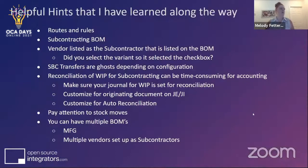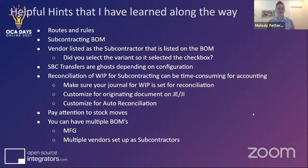Some helpful hints from being new to Odoo but understanding client needs from my manufacturing background: routes and rules are extremely important and must be set up correctly. The subcontracting bill of materials must have the correct subcontractor vendor associated to it and linked on the inventory tab — otherwise it won't create a PO to the right subcontractor or won't create one at all. Make sure the vendor is flagged as a subcontractor and that the variant checkbox is selected.